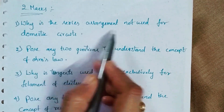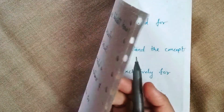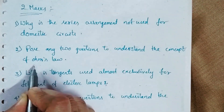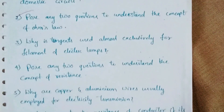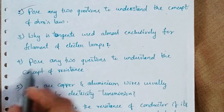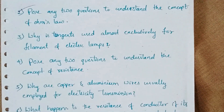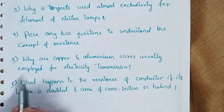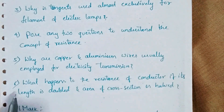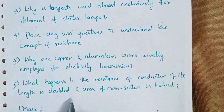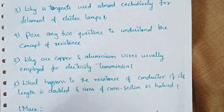Two-mark questions from Electricity: Why is the series arrangement not used for domestic circuits? Pose any two questions to understand the concept of Ohm's law. Why is tungsten used almost exclusively for the filament of electric lamps? Pose any two questions to understand the concept of resistance. Why are copper and aluminium wires usually employed for electricity transmission? What happens to the resistance of a conductor if its length is doubled and the area of cross-section is halved?